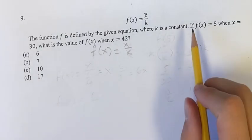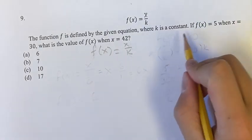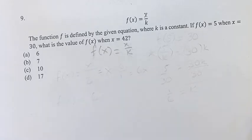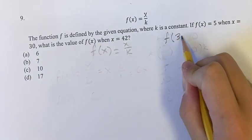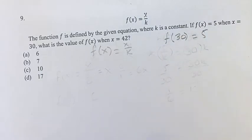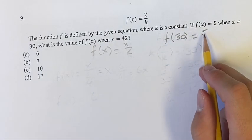Luckily, we're given that f(x) equals 5 when x is 30. So what does that mean? f(30) equals 5. What is f(30)?